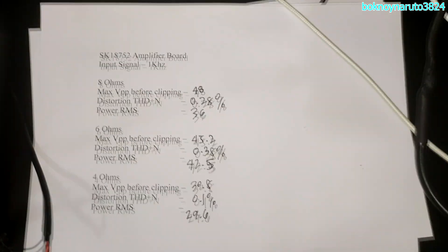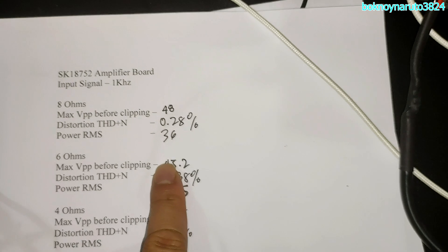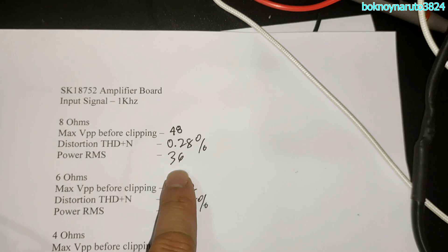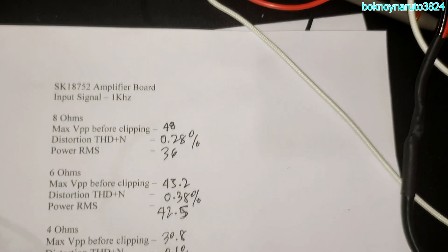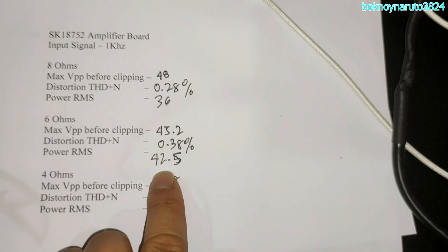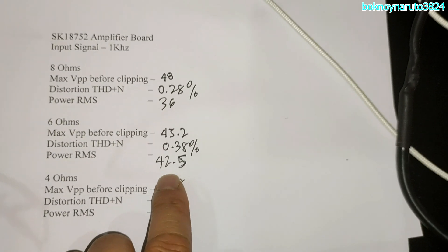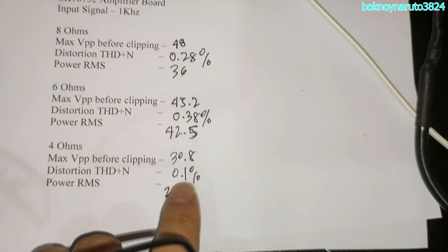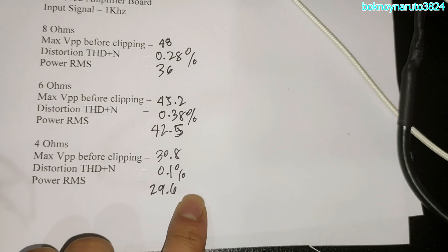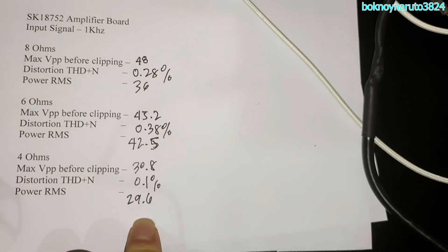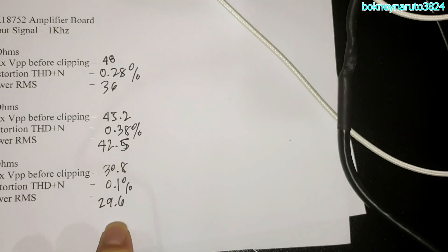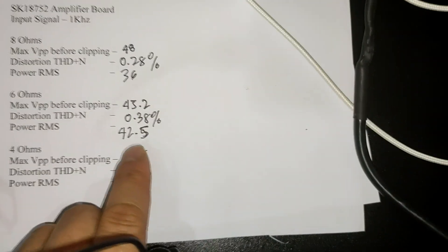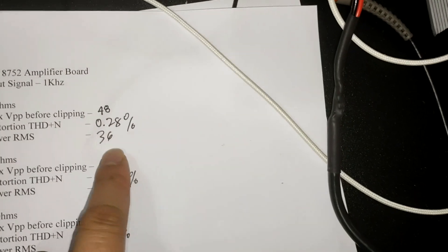So this is our final result. At 8 ohms load, this board can do 36 watts RMS at 0.28% THD. At 6 ohms load: 42.5 watts RMS at 0.35%. This board actually has a lower output power at 4 ohms load. The highest output power this board can do is 42.5 at 6 ohms.